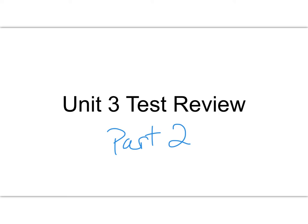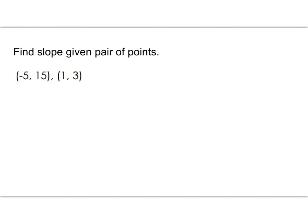In this quick Unit 3 test review part 2, we're going to be looking at finding slope from two points. In this example, you see that it asks you to find slope given a pair of points. We have this point (-5, 15) and this point (1, 3).